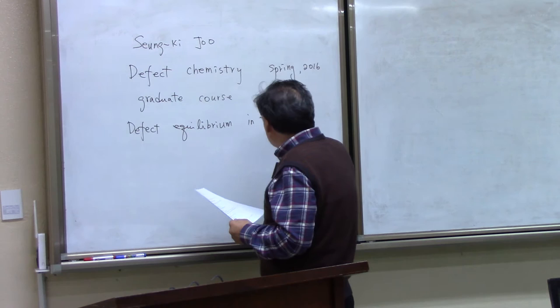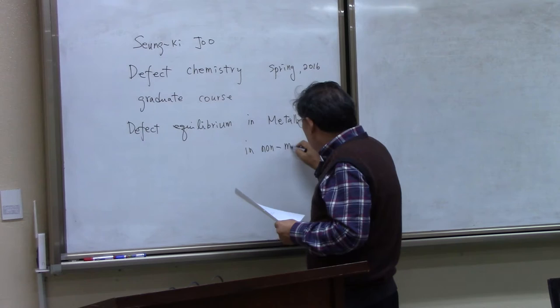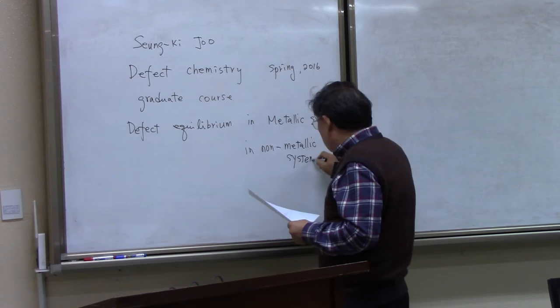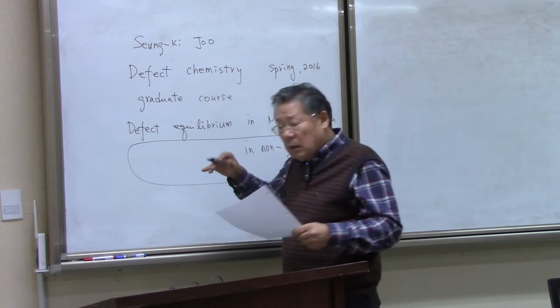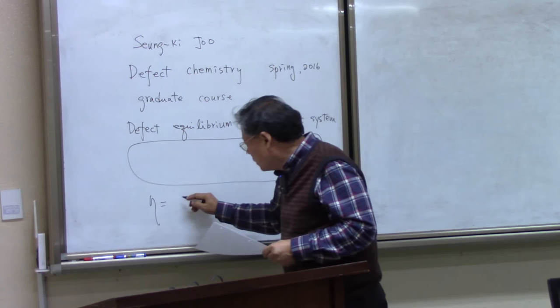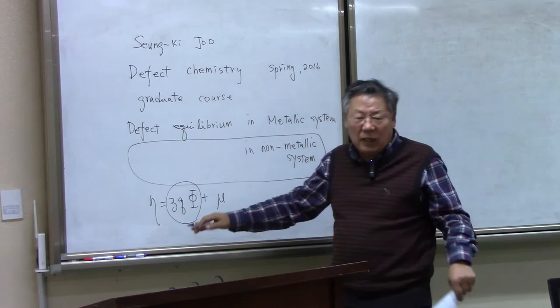We are going to discuss about the defect equilibrium in the non-metallic system. This non-metallic system is more important than the defect equilibrium in metallic systems because of the electrochemical potential, which consists of the electrostatic potential and the chemical potential. In the metallic system it doesn't have any electrostatic potential.